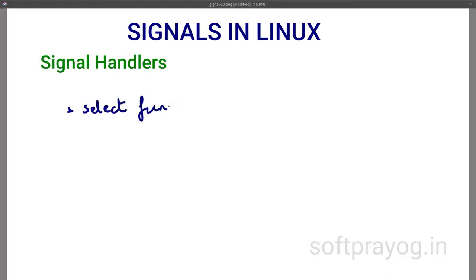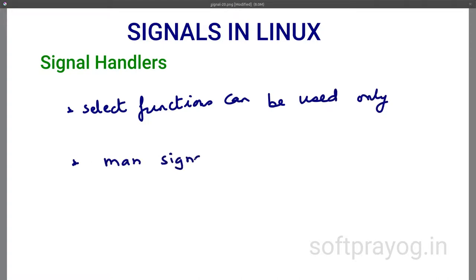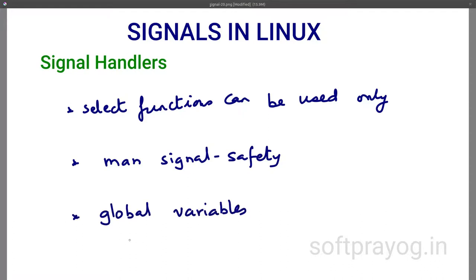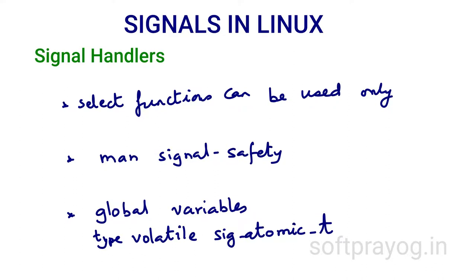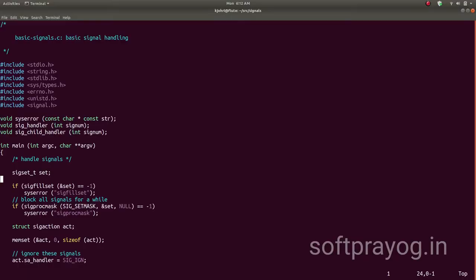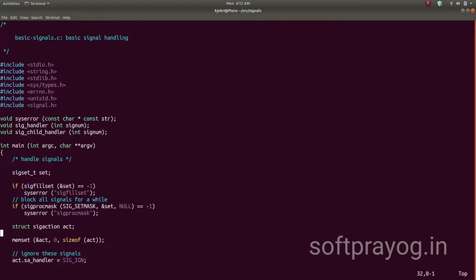Writing a signal handler has some unique requirements. You cannot use functions like printf, exit, etc. There is a list of safe functions for use in signal handlers, and the list can be printed with the command man signal-safety. Moreover, global variables can only be used safely if they are of the type volatile sig_atomic_t. Since all programs can receive signals, it is good to have some basic signal processing in our programs.